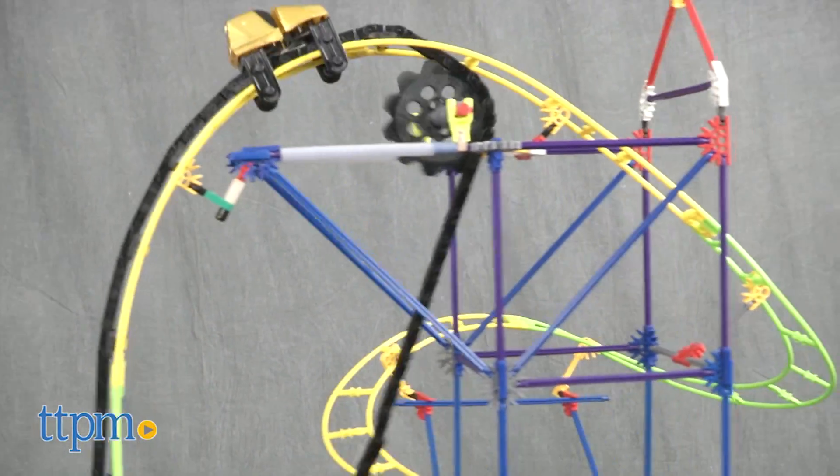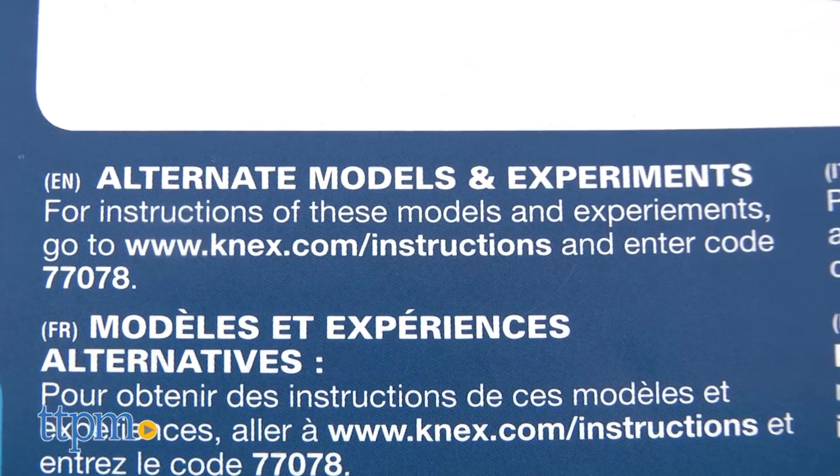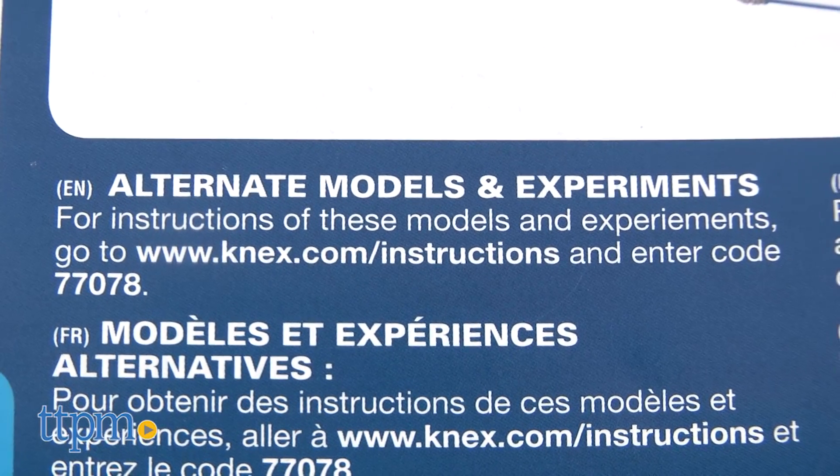To build the roller coaster ramp and half pipe and complete the experiments, visit www.connex.com/instructions and enter code 77078.